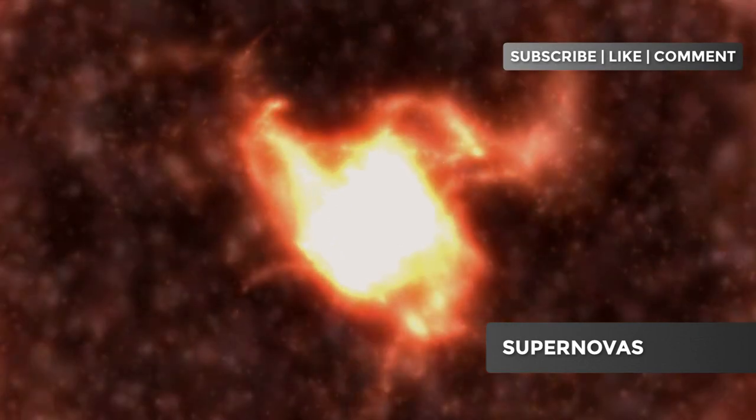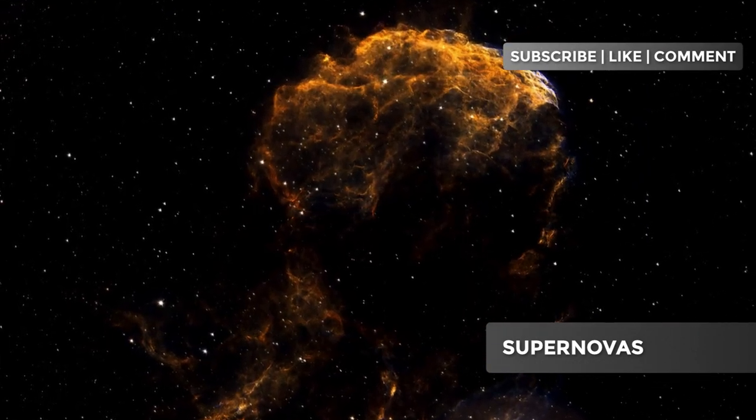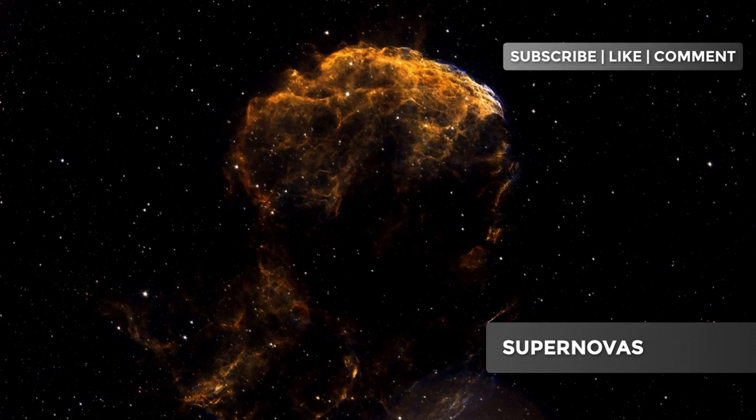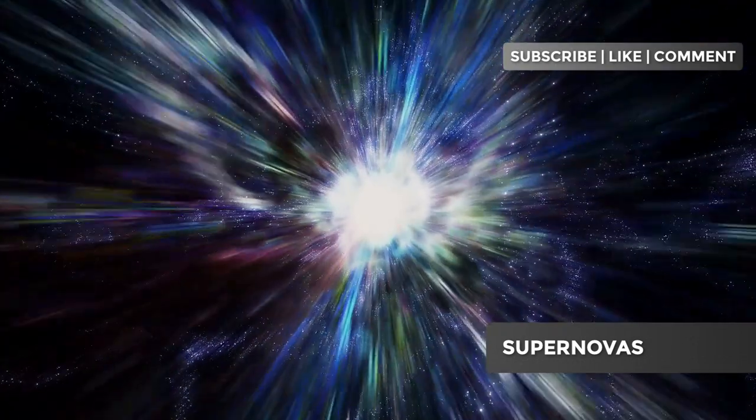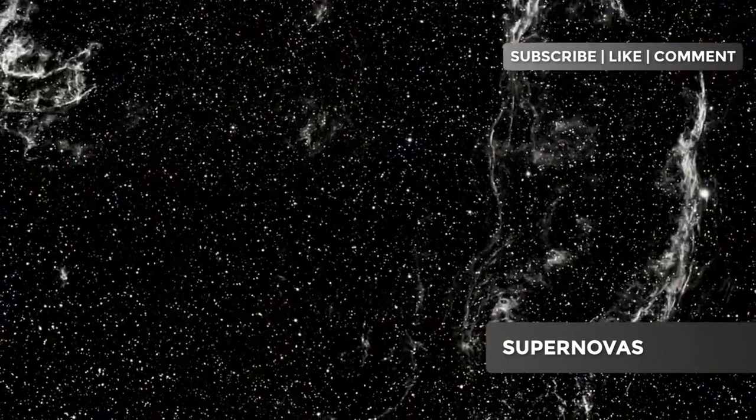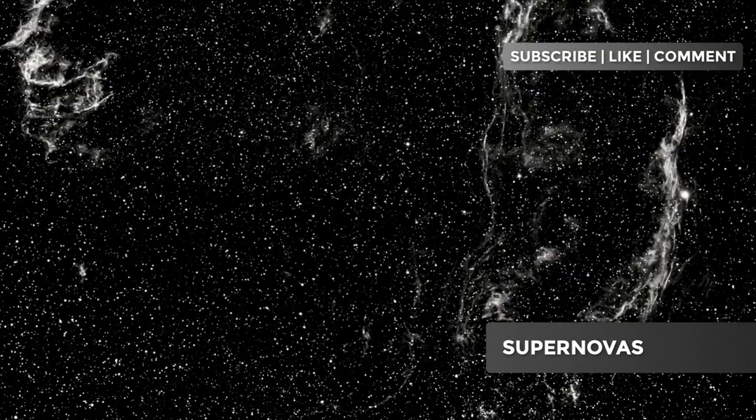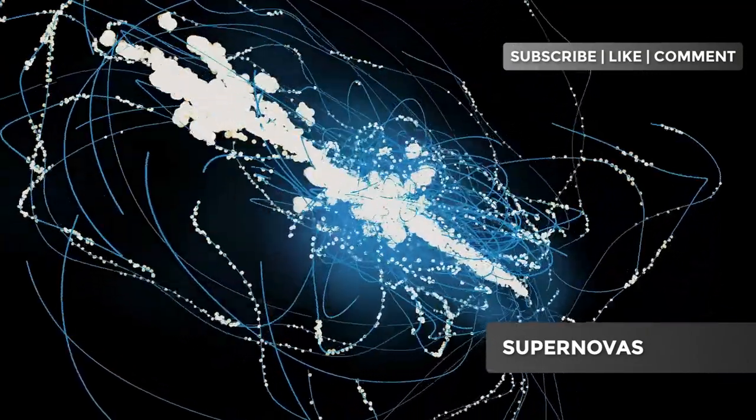Another fascinating type of supernova is the partial collapse supernova. These explosions occur when massive stars undergo instabilities during their final stages of evolution. In these supernovas, only part of the star collapses, while the rest is ejected in a violent explosion. These events are less energetic than core collapse supernovas, but still release a significant amount of energy and matter into space.